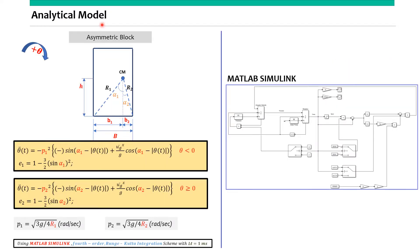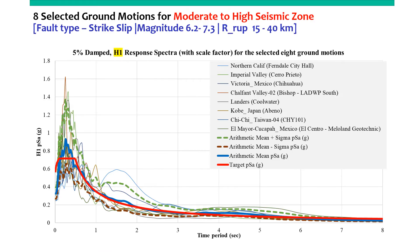When we consider the analytical study, these are the equations for the rocking motion of the asymmetrical block. These equations are adapted and modified from past studies — they are nonlinear differential equations. To find the solutions, we use MATLAB Simulink. In our study, we chose eight selected ground motions for moderate to high seismic zones.